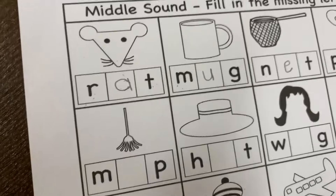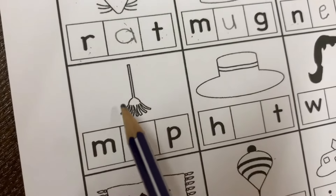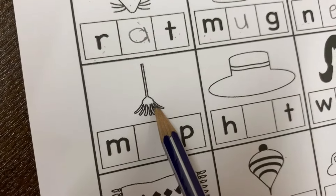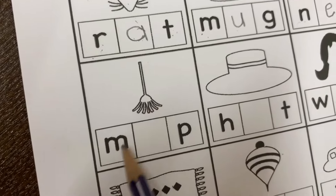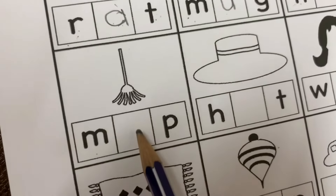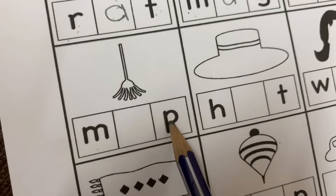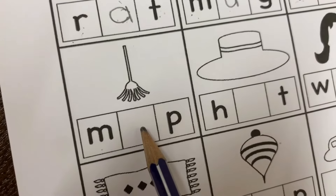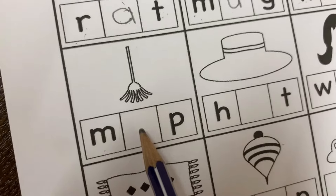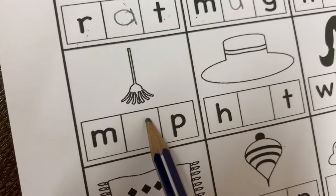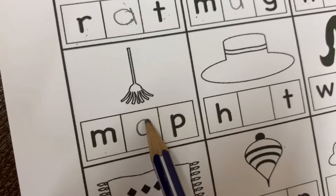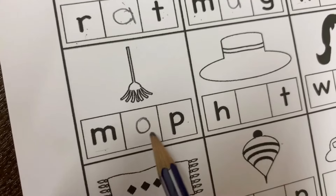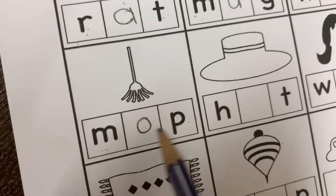Let's move on now. What do we have? Mop. M... O... P. The missing sound is O. Which letter has the sound O? Letter O. Good job. M... O... P. Mop.